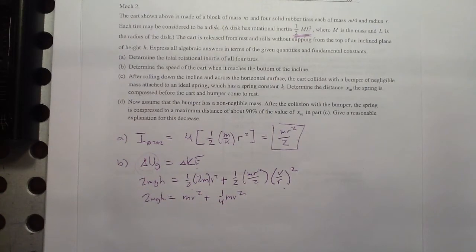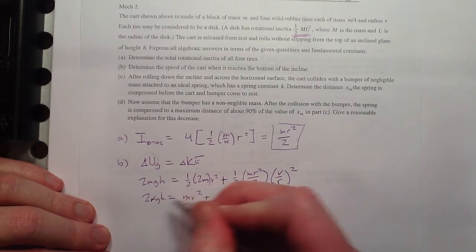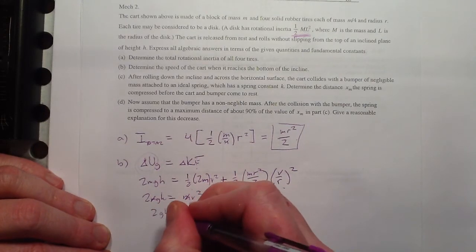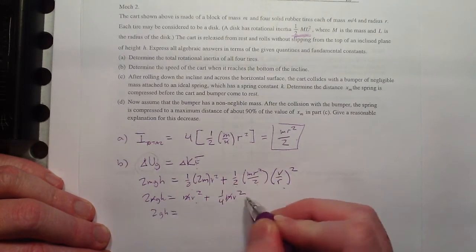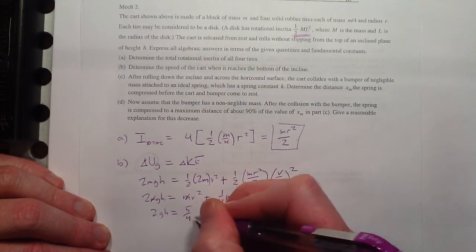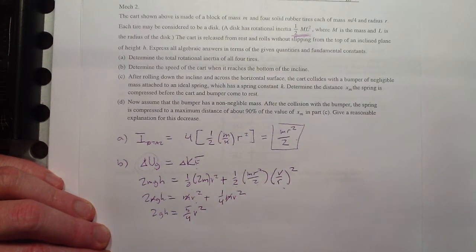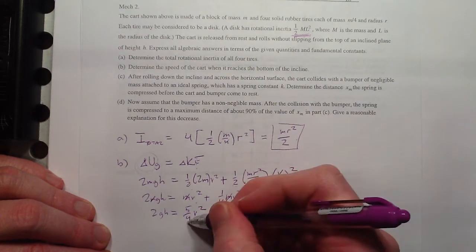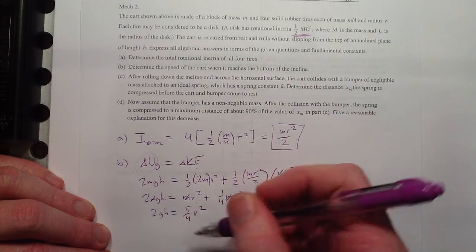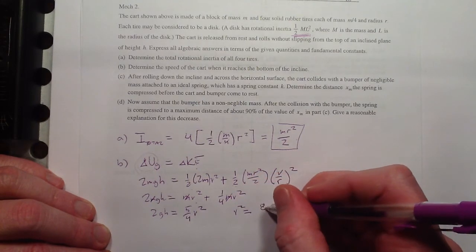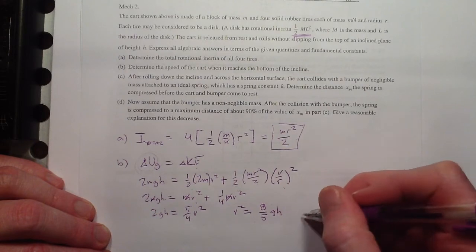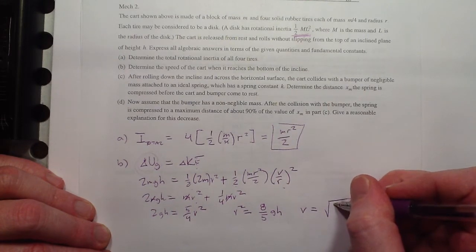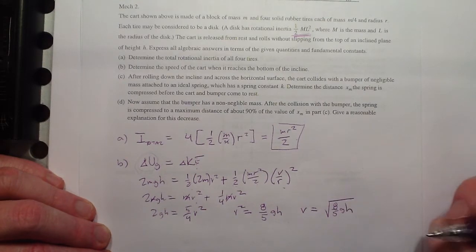Working through the algebra: 2mgh equals mv² plus (1/4)mv². The m's cancel, giving 2gh equals (5/4)v². Multiplying both sides by 4/5, v² equals (8/5)gh. So v equals the square root of (8/5)gh.